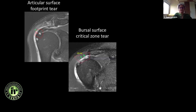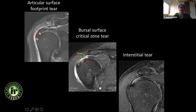As against that, here is a tear where the articular surface fibers are intact but the bursal surface fibers are torn. This looks like more than 75 percent thickness — I would say more than 75 percent thickness critical zone bursal surface tear. So that's what is important.